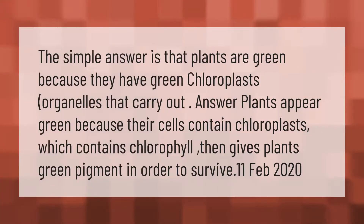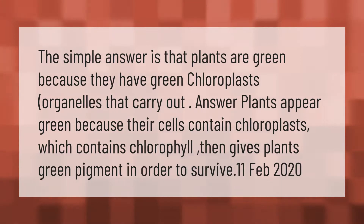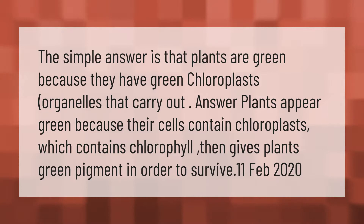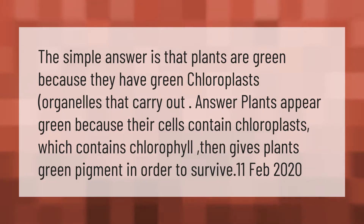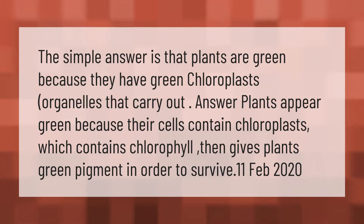The simple answer is that plants are green because they have green chloroplasts — organelles that carry out photosynthesis. Plants appear green because their cells contain chloroplasts, which contain chlorophyll that gives plants their green pigment, in order to survive.